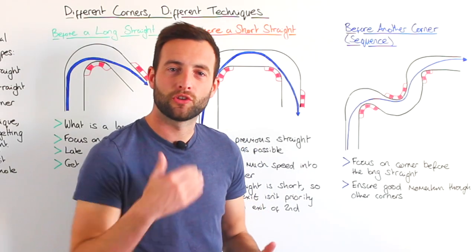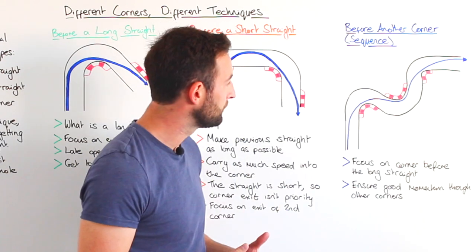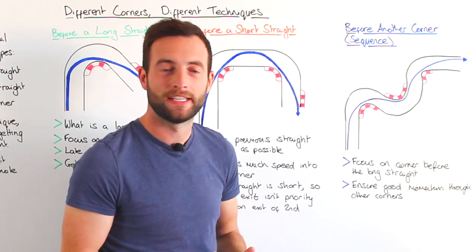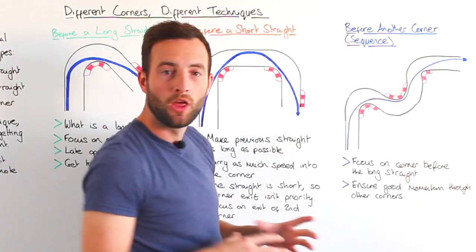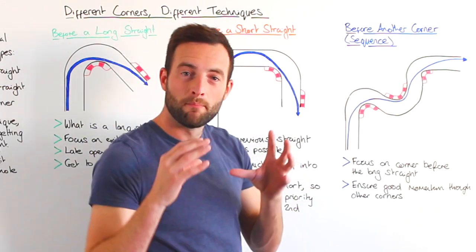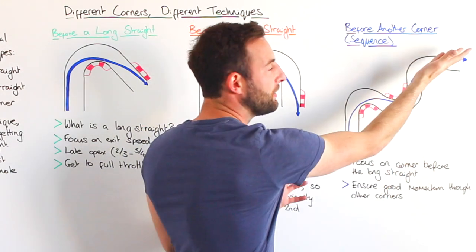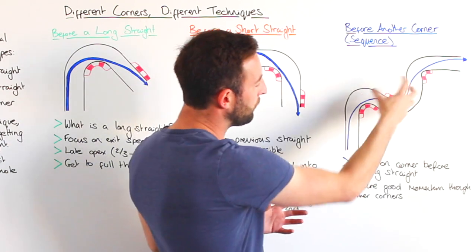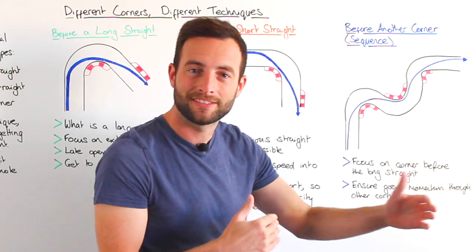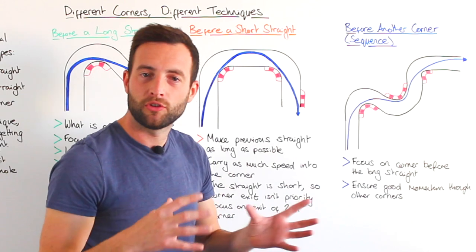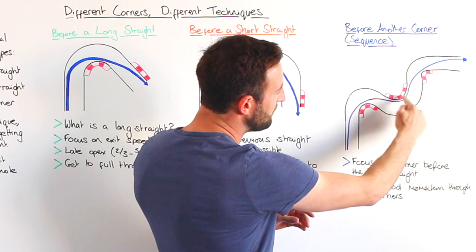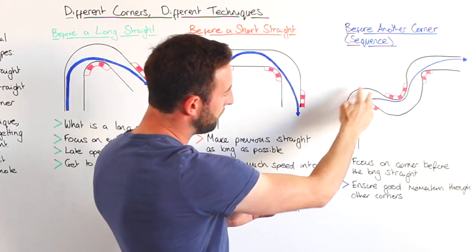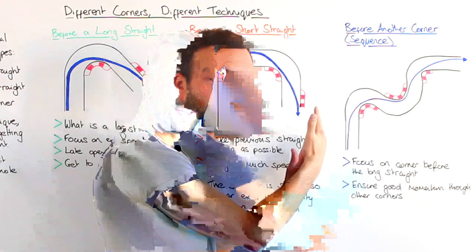The final type of corner is one that directly precedes another corner or a number of corners. As you can see in this sequence, the racing line is set up so that we maximise the exit speed on the final corner. We need to carry as much momentum through the first sequence of corners as we can, but the most important thing is that we open up the final corner as much as possible so we can get on the accelerator as soon as we can and carry that speed down the next straight. The corners before the final corner that leads onto the long straight are a bit of a compromise — you need to end up on the outside of the track so you can open up the final part of the corner.